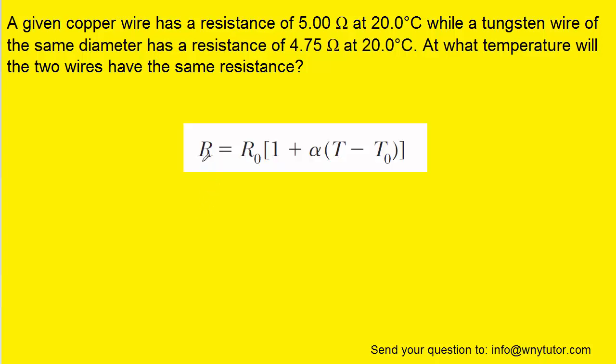We recall from this chapter that the resistance of a wire can be related to temperature using the following equation, and that would be true for both the copper wire as well as the tungsten wire. Notice that the symbol for tungsten is W and the symbol for copper is Cu.